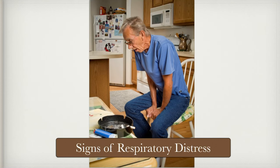Some signs of respiratory distress: looking at a picture, one sign is the tripod position — a classic sign of someone short of breath. We also see the mouth is open, so they're probably breathing through their mouth and gasping for breath. You can see neck muscles being used — we call that accessory muscle use. And if you look at the table, there are cigarettes and a lighter, suggesting a smoker who likely has a history of emphysema and bronchitis.